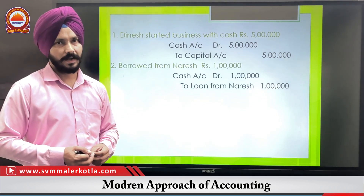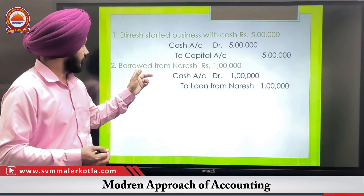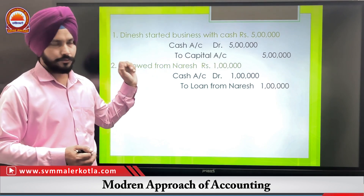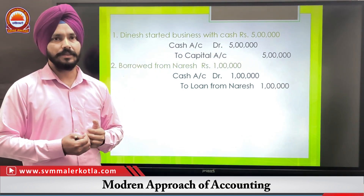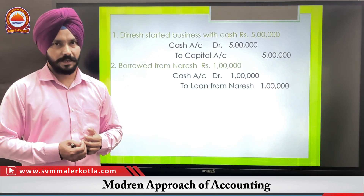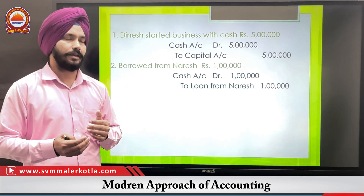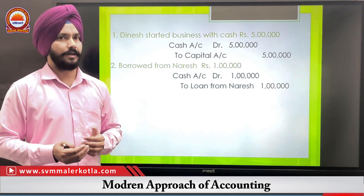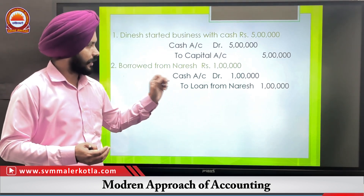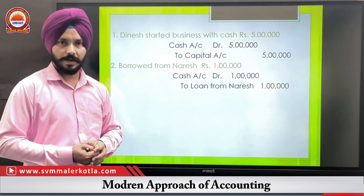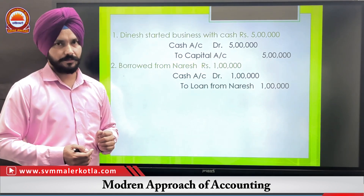Second example: Borrowed from Naresh rupees one lakh. Since we have borrowed from Naresh, that means we have a liability. When our liability increases, we credit it. Therefore, the entry is: Cash Account Debit to Loan from Naresh Account.